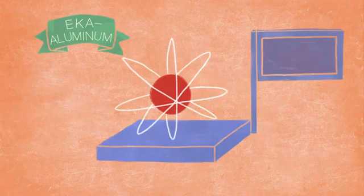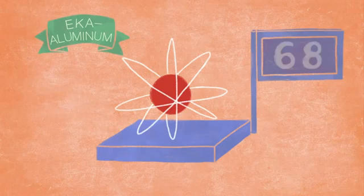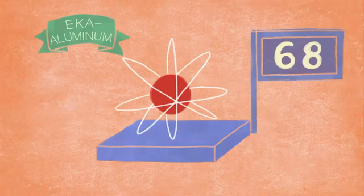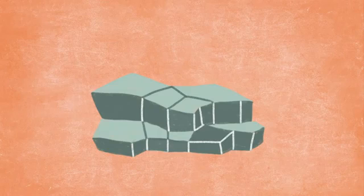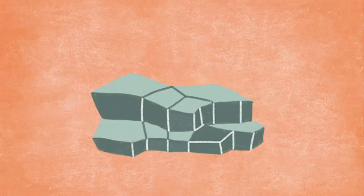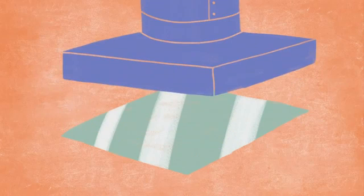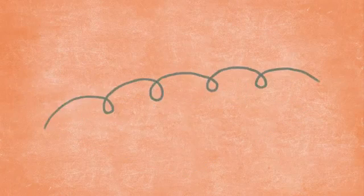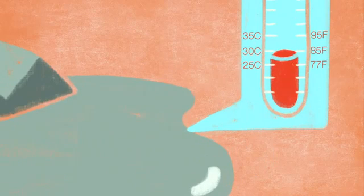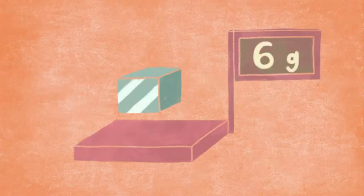First of all, an atom of eka-aluminum has an atomic weight of 68, about 68 times heavier than a hydrogen atom. When eka-aluminum is isolated, you'll see it's a solid metal at room temperature. It's shiny, it conducts heat really well, it can be flattened into a sheet, stretched into a wire, but its melting point is low, like freakishly low. And a cubic centimeter of it will weigh six grams.